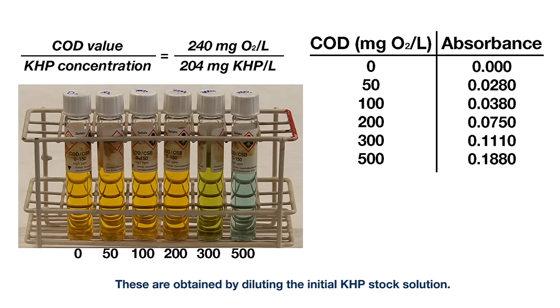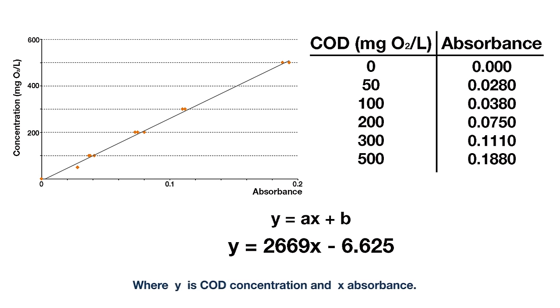These are obtained by diluting the initial potassium hydrogen phthalate stock solution. Once that's done, the absorbance of all standards is read in the spectrophotometer, and the equation fit, where Y is COD concentration and X is absorbance.